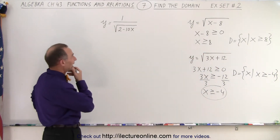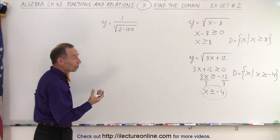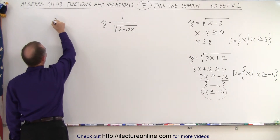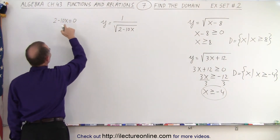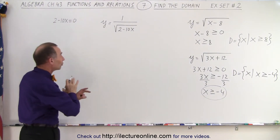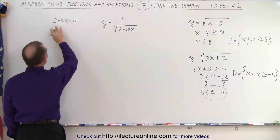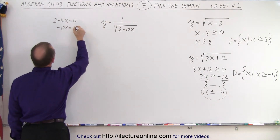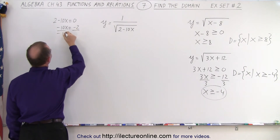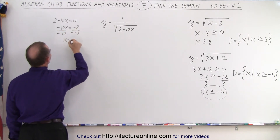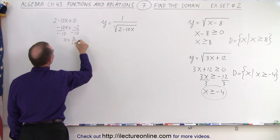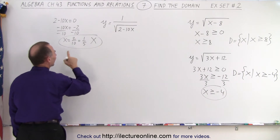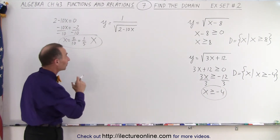On the next one, it's a little more complicated — we have two potential restrictions. First, the denominator cannot equal zero. So 2 minus 10x equals zero; solving for x gives us the value x cannot be. Moving the 2 across, we get minus 10x equals negative 2. Dividing both sides by negative 10, x equals 2 over 10, which is 1 over 5. So x cannot equal 1 fifth; otherwise the denominator will be zero.